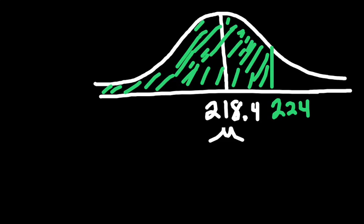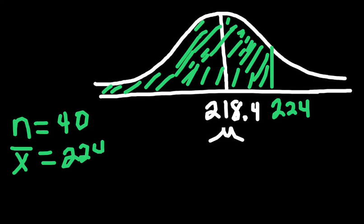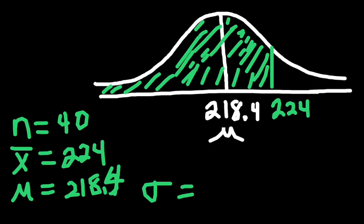And so, we know that the number of samples we're going to take are 40. We know that the mean we want to be less than is 224. We know that our population mean is 218.4. And our standard deviation is 25 for the whole population.